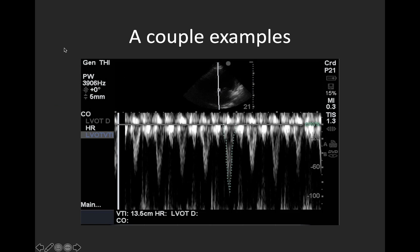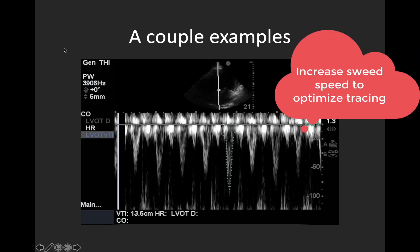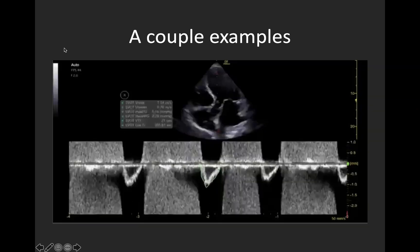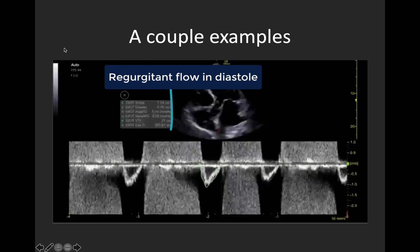Here is an example with a reasonable trace from a difficult 2D image, though to optimally measure this we might have increased sweep speed to stretch the waveforms more across the screen and make tracing easier. There is also some beat-to-beat variation, perhaps with respiration, so ideally we would measure several beats and average them. And this is a pretty stunning example showing what aortic regurgitation looks like on this image — since you're in the LVOT you'll capture regurgitant flow through the aortic valve if present, seen here as flow above the baseline that has aliased completely, generating an impressive waveform pattern.